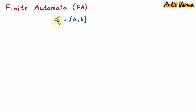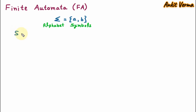Let us suppose we are having sigma that is equal to set of a comma b. Here sigma is the alphabet and a and b are symbols. Symbols are the basic building blocks, which are a and b, and alphabet is the finite set of these symbols. Now from this given alphabet we are going to generate some strings. We give the name s that is equal to aba. Here s signifies the string — a string is the sequence of given alphabets.